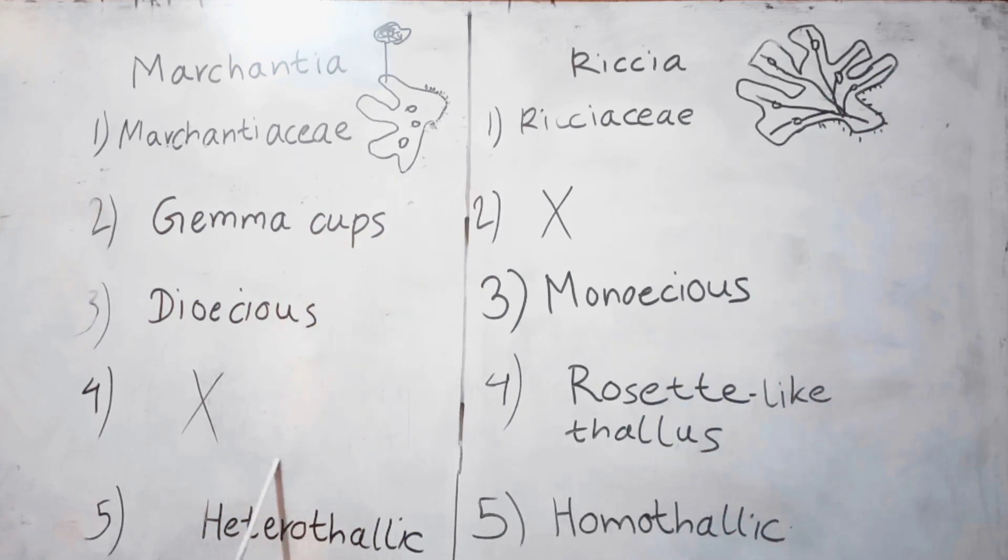The thallus of Marchantia is not rosette-like. The thallus of Riccia is rosette-like.